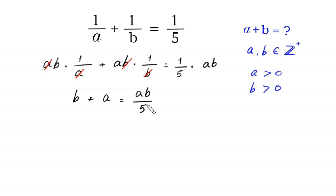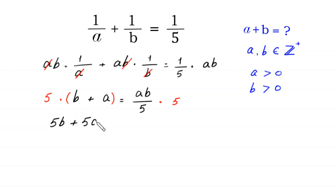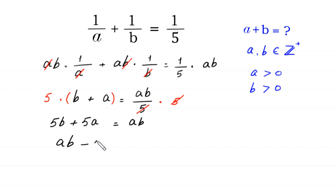Because we have 5 in the denominator, we multiply both sides by 5. At the left side: 5b plus 5a equals ab. Now we move 5b and 5a to the right side, giving us ab minus 5b minus 5a equals 0.